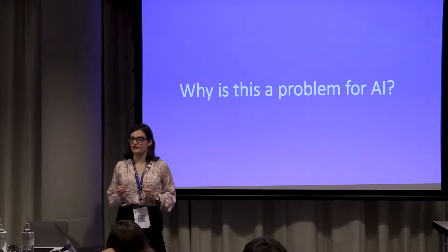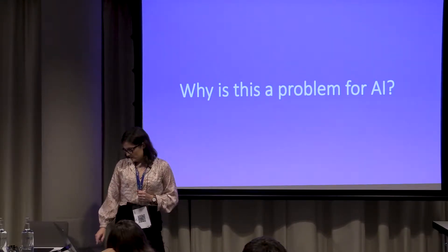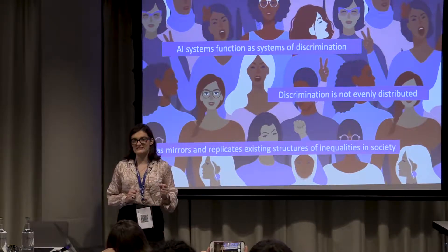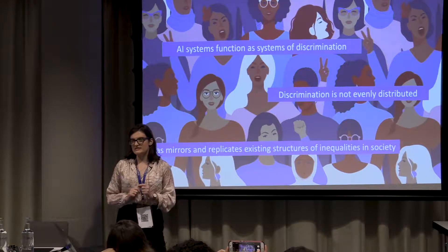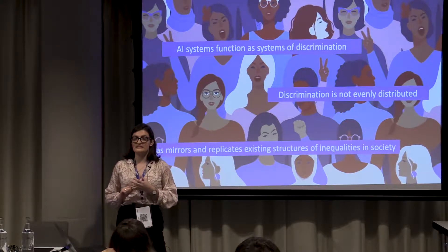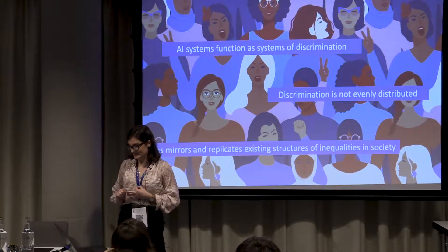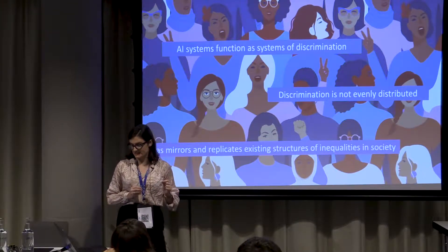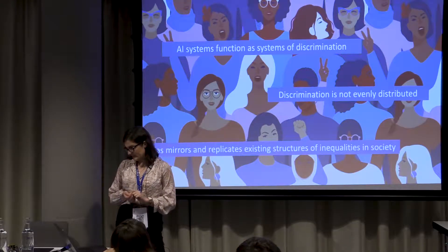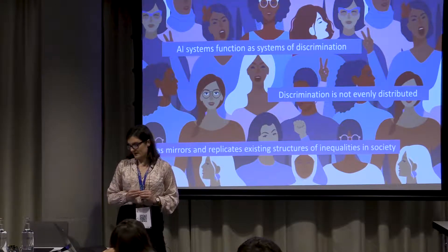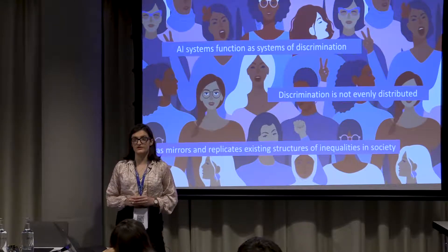From a high-level view, AI systems function as systems of discrimination, but this discrimination is not evenly distributed. While they are classification technologies that rank, categorize, and differentiate, when bias creeps in they can mirror and replicate existing structures of inequality in society. Such systems are repeating patterns of racial and gender bias in a way that can deepen and justify historical inequality, and I think the commercial deployment of these tools is a cause for great concern.